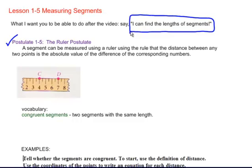This postulate says a segment can be measured using a ruler, using the rule that the distance between any two points is the absolute value of the difference of the corresponding numbers. I can measure this segment CD from here to here, the corresponding numbers.